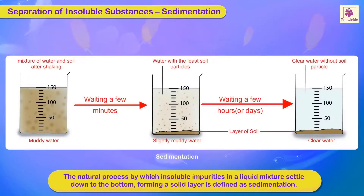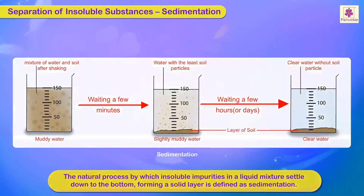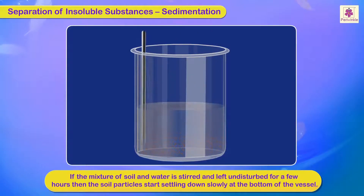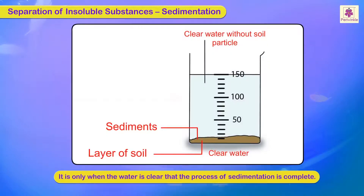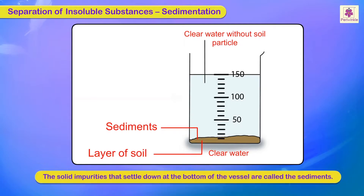Sedimentation is the natural process by which insoluble impurities in a liquid mixture settle down to the bottom, forming a solid layer. If a mixture of soil and water is stirred and left undisturbed for a few hours, the soil particles start settling down slowly at the bottom of the vessel. When the water is clear, sedimentation is complete. The solid impurities that settle at the bottom are called sediments.